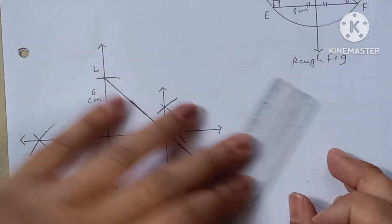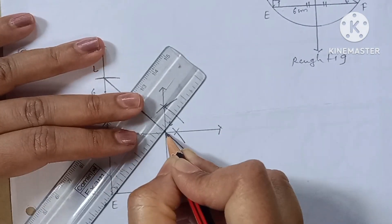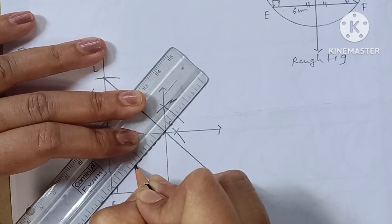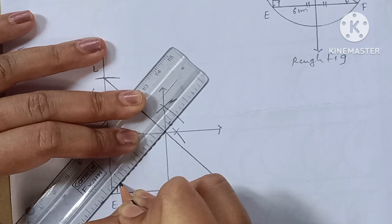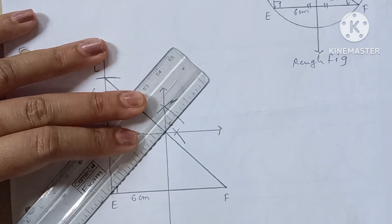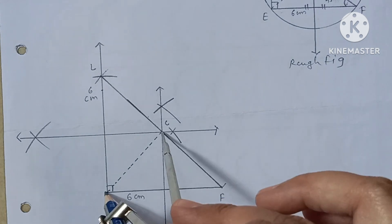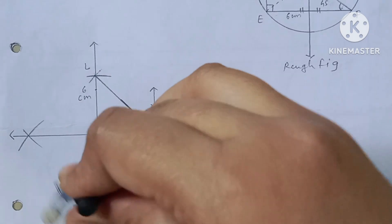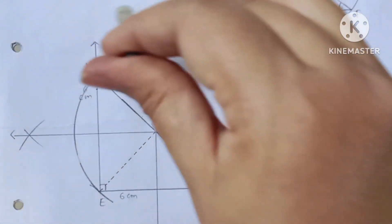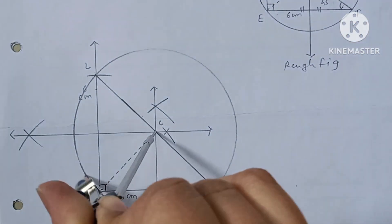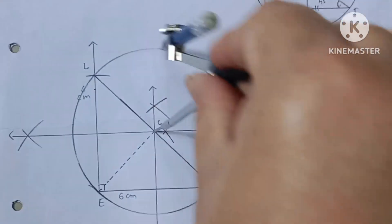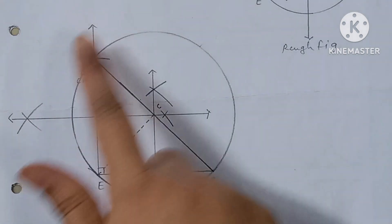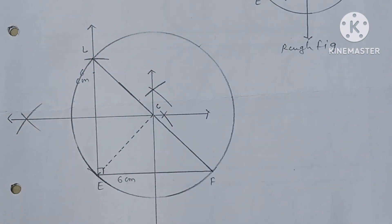Now join C and E — CE is your radius. Take the CE distance in your compass and draw the circumcircle. This is your circumcircle for triangle DEF. Thanks for watching the video.